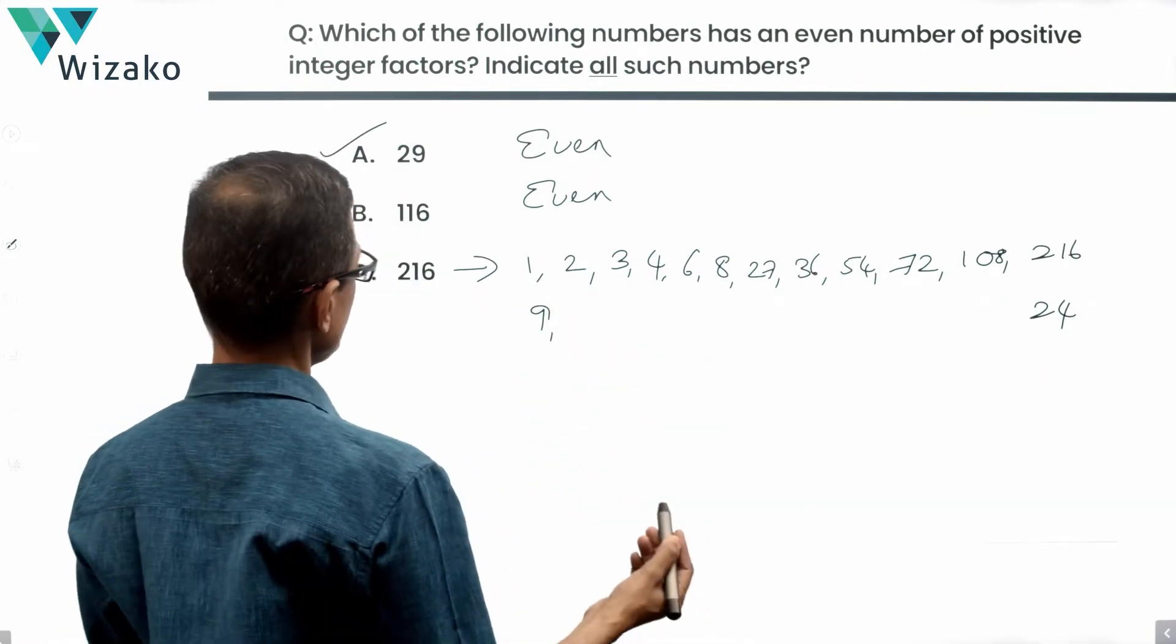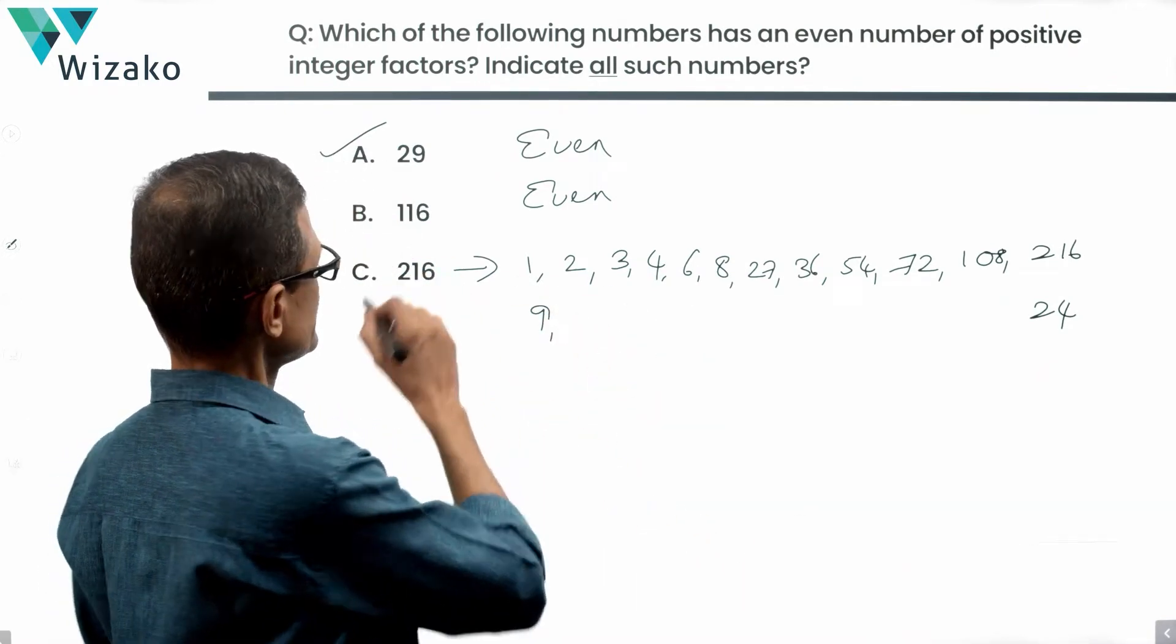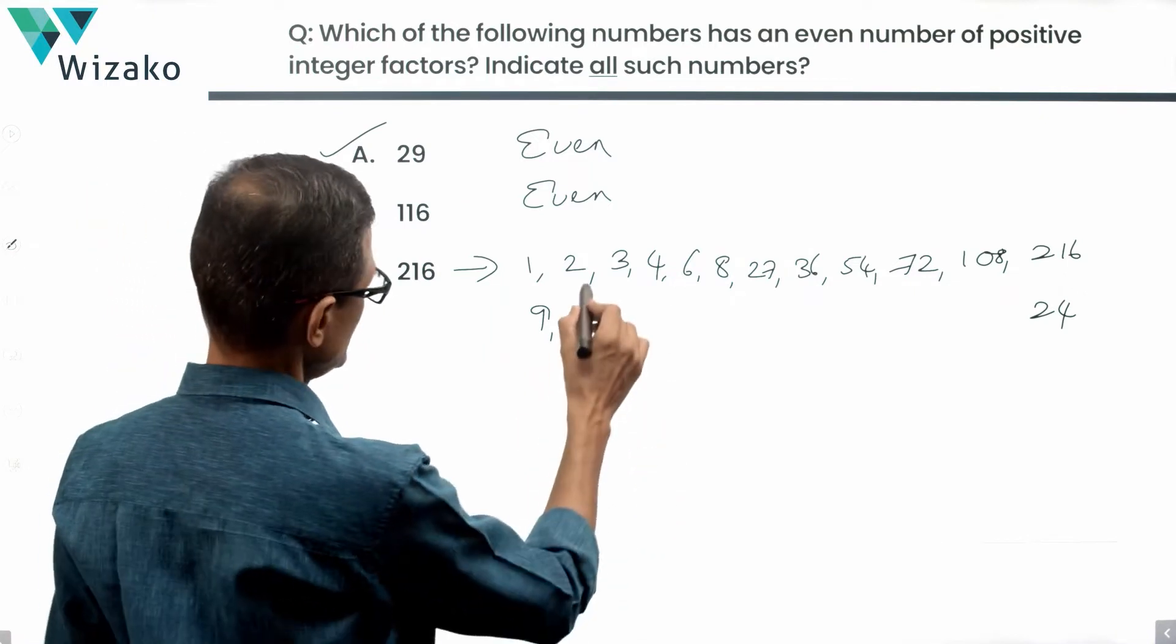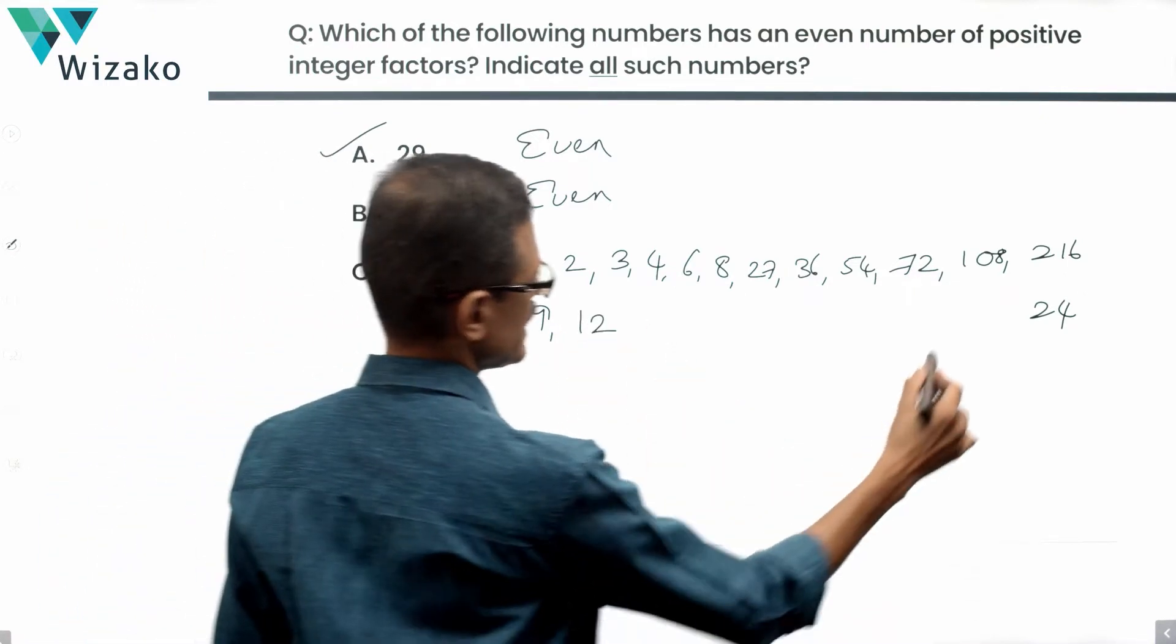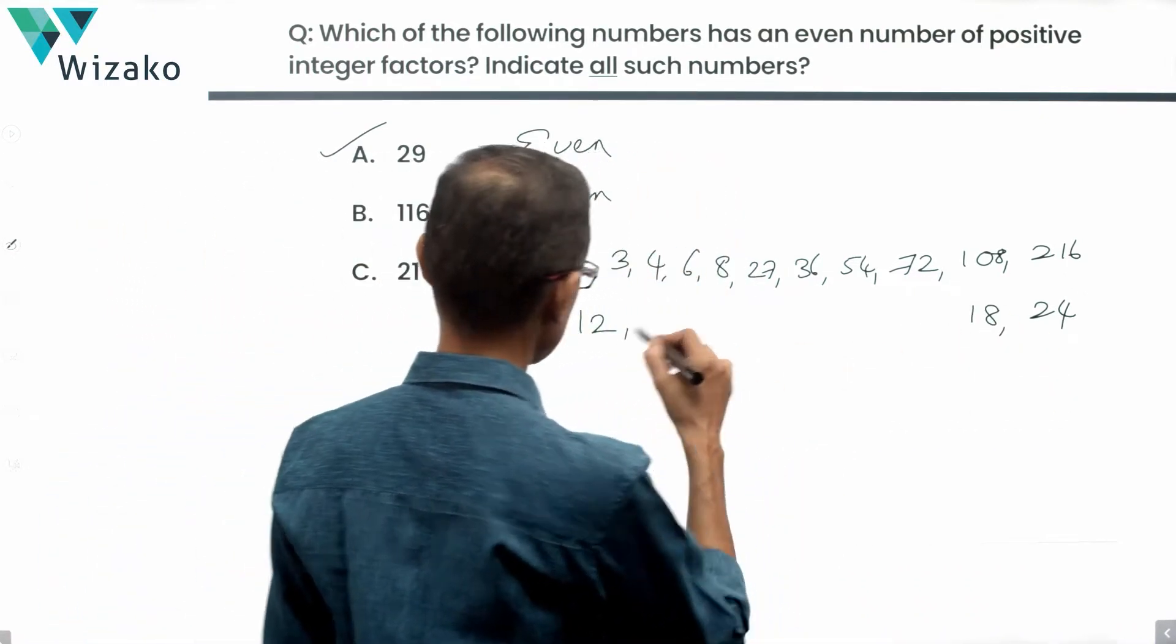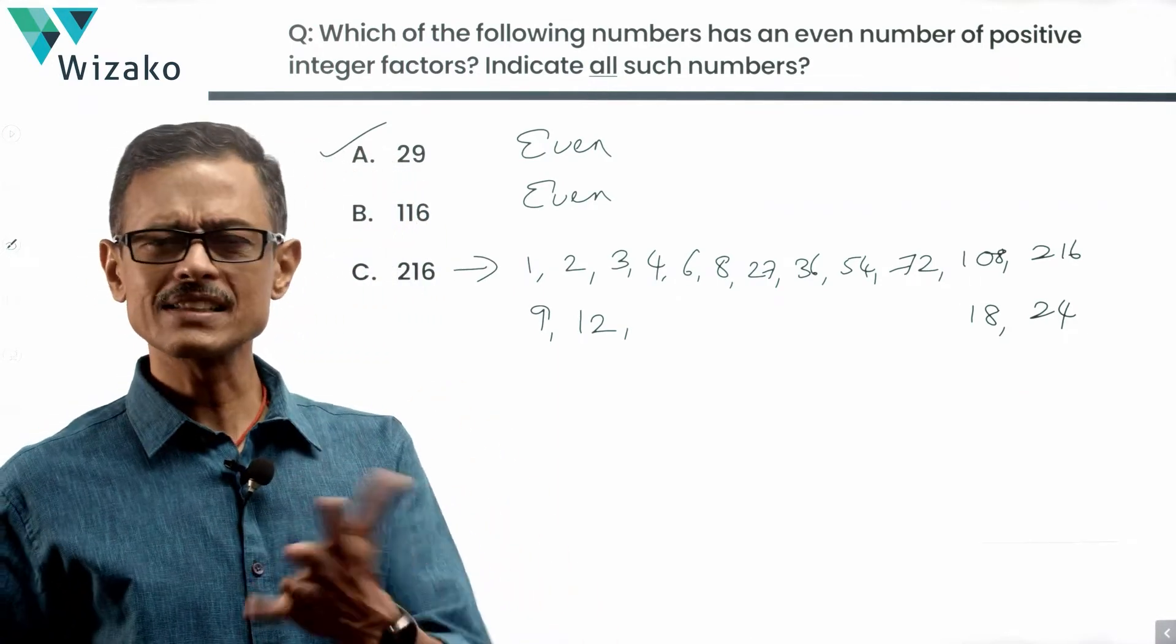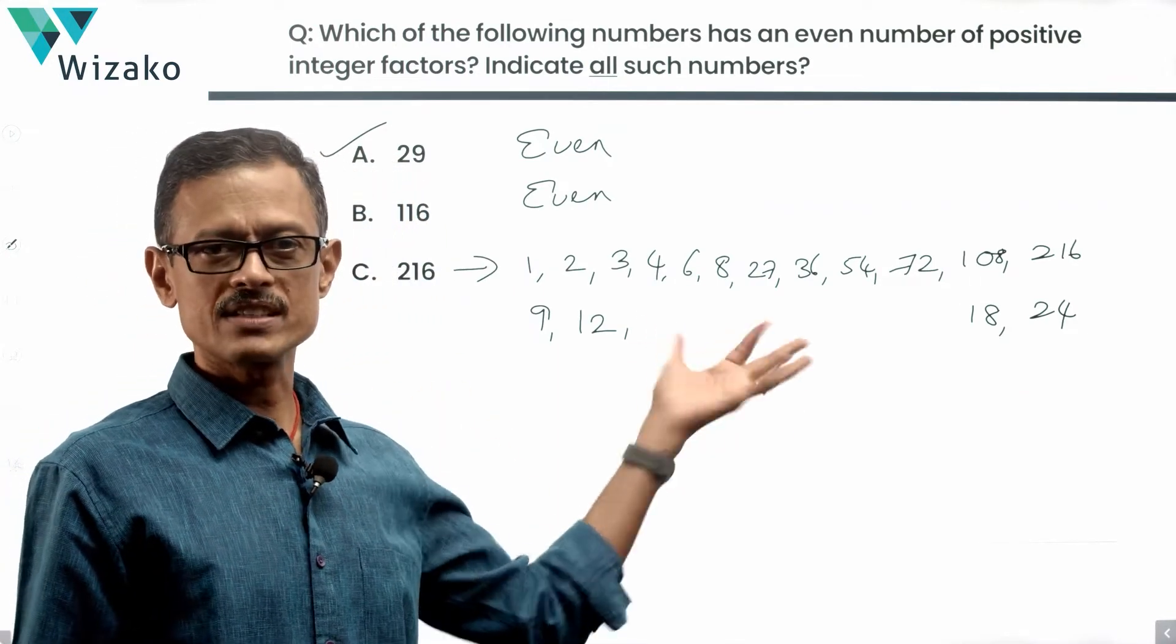10 will not divide this number. 11 will not divide this number because the difference in the digits is 8 minus 1, 7, not going to work. Will 12 divide this number? Yes, 12. 18. 12 times 18 is 216. Will 13 divide this number? No. 14 because we don't see a 7 will not work.